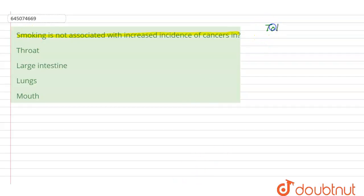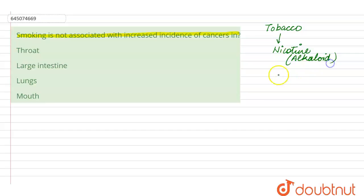We see that smoke has got tobacco in it, and this tobacco has got the active chemical which is called nicotine. It is an alkaloid, and this alkaloid is supposed to be a carcinogenic substance. Carcinogenic means any substance which is able to cause cancer.